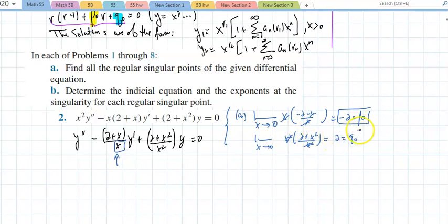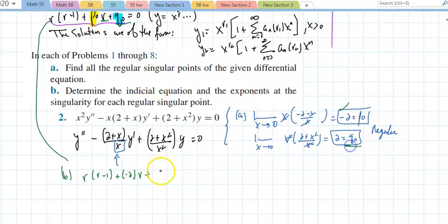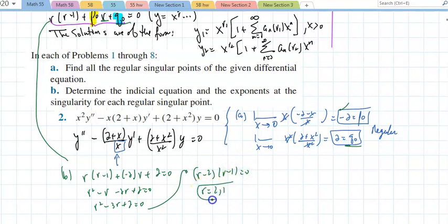So we know this is a regular point. And once I do that, I go to part b. In part b, it is just a copy of this: r into r minus 1, we know that p sub 0 is a negative 2 times r plus q sub 0, which is a 2 equals 0. Pretty much you save yourself all the pain of solving like we did in the previous section. This is a very special equation. That would mean that r minus 2 into r minus 1 equals 0. And r would equal 2 or 1. That's all we want.